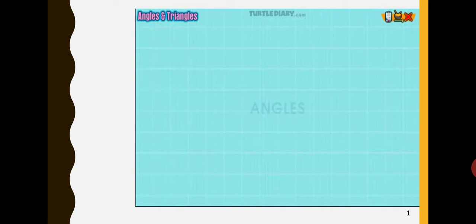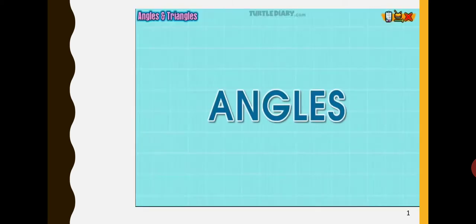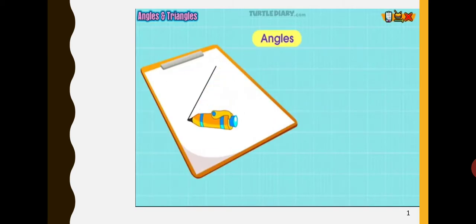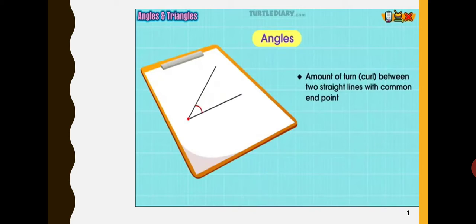Angles are all around us. Angles are formed when two lines meet. If there are two straight lines such that they have a common end point, then the amount of turn or curl between these two lines is known as angle between those lines. There are angles in most shapes and in many of the objects you see and use on a daily basis. Angles are measured in degrees.